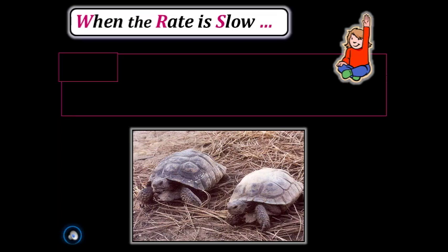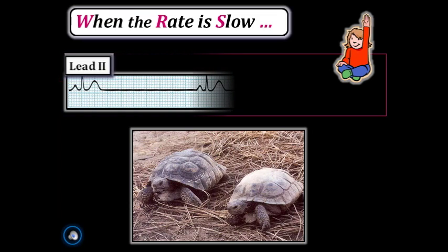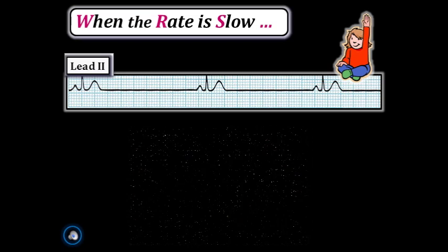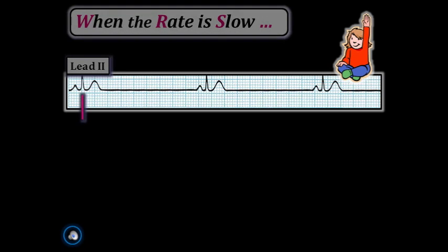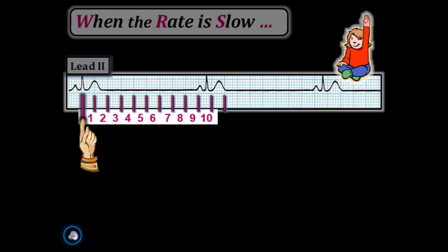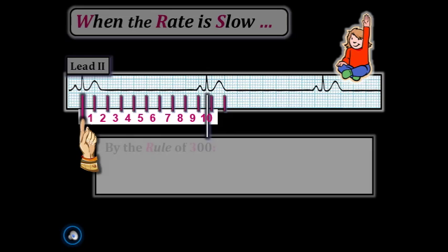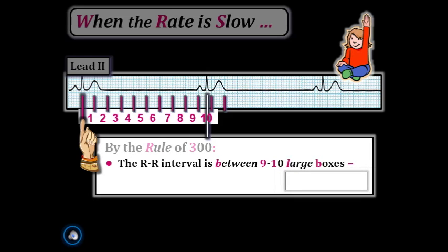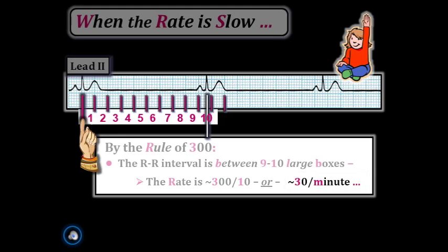The Rule of 300 works equally well when the rate is slow. Starting on a heavy line, if the R-to-R interval is between nine to ten large boxes, then 300 divided by 10 equals 30 per minute. Since the interval is a little less than ten large boxes, the rate must be a little faster than 30 — about 32 to 33 per minute.